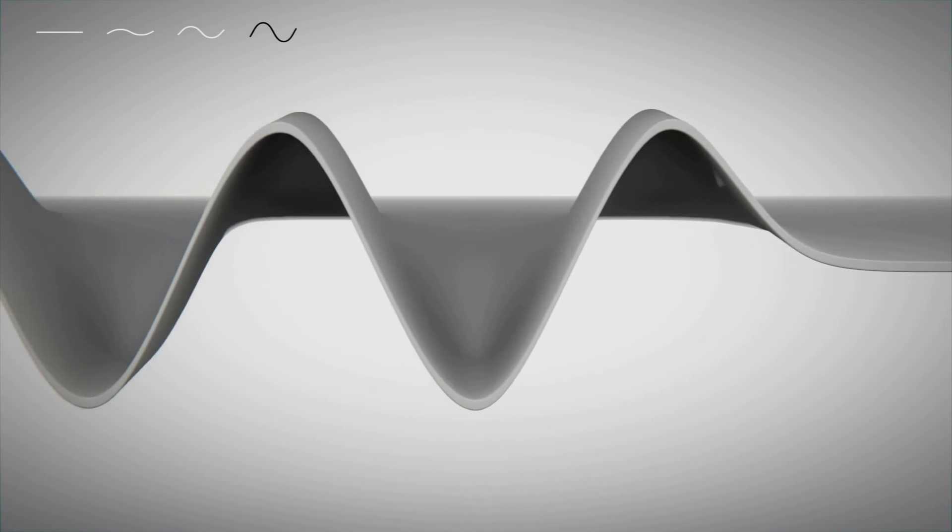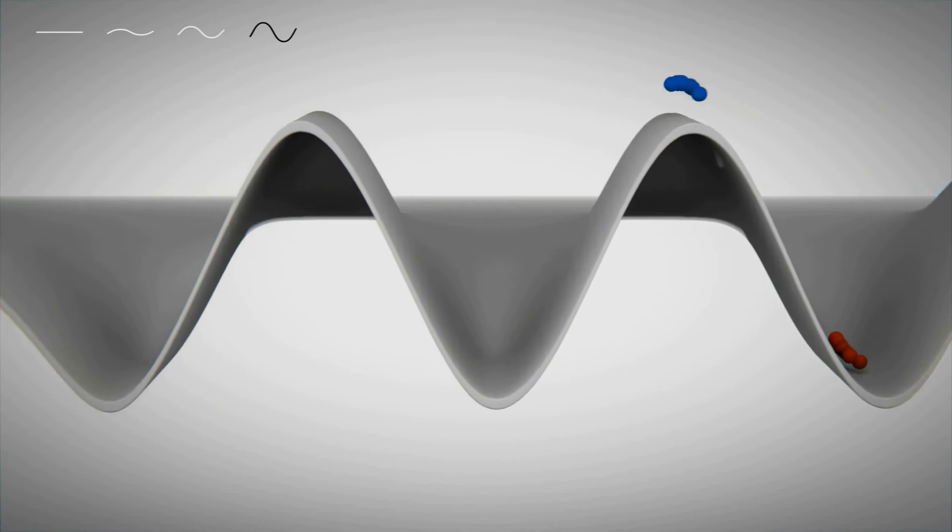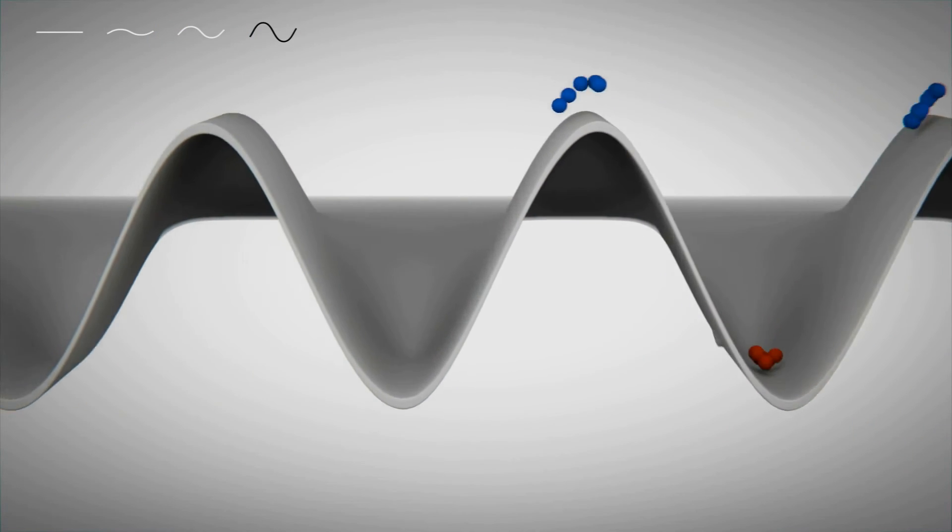At high amplitudes, the power of the wave is sufficient to convey both electrons and holes. They are separated by half the acoustic wavelength which prevents their recombination.